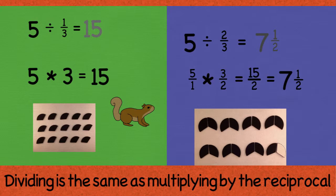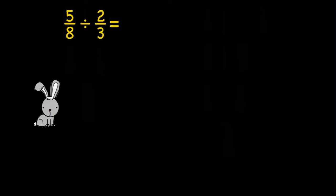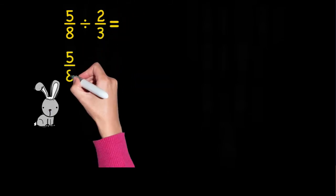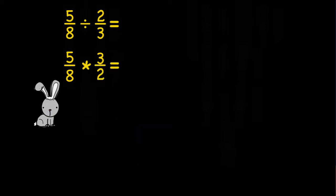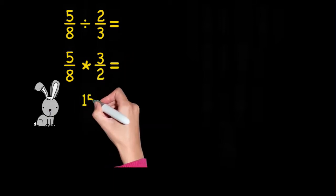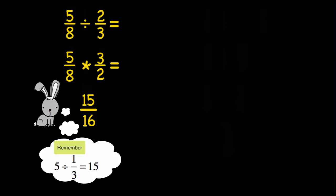So let's practice dividing fractions by multiplying by the reciprocal. Let's say I had 5 eighths divided by 2 thirds. Well, that would be the same thing as 5 eighths times the reciprocal of 2 thirds, which is 3 halves. And when I multiply across, I get 15 sixteenths. Notice when I divide by a number less than 1, I get a solution that's actually greater than what I started with.